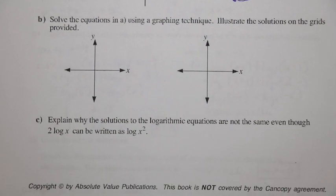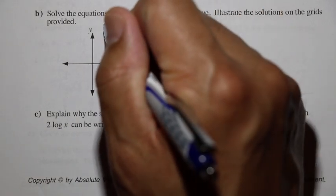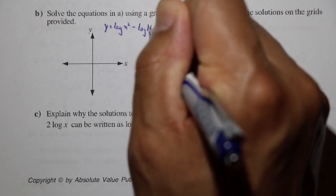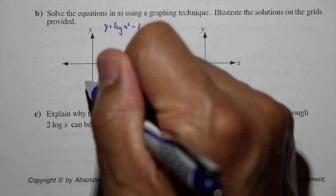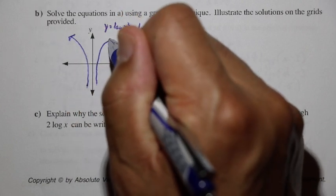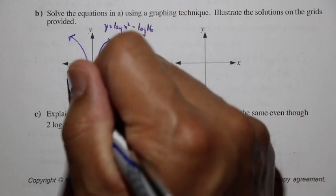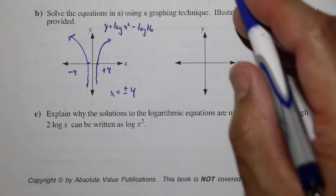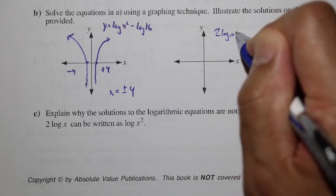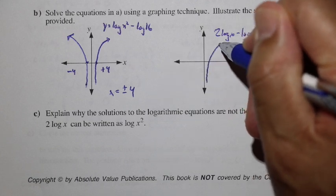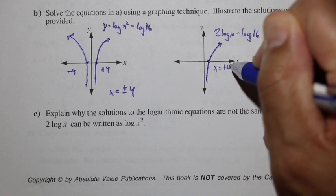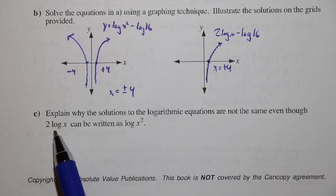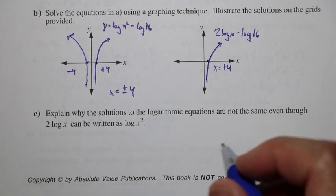Using a graphing technique: if y equals log(x squared) minus log 16, the graph has two branches with zeros at negative 4 and positive 4, giving x equals plus or minus 4. For part 2, graphing 2 log x minus log 16 gives only one branch with the zero at positive 4. The reason the solutions differ is the domain. For 2 log x, the argument x must be greater than 0, so only positive x values work. For log(x squared), x squared is always positive for any real x, so the domain is all real numbers.